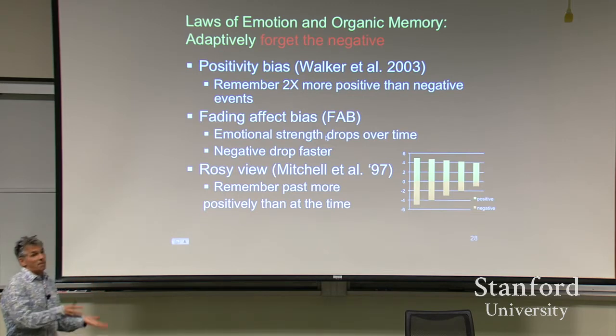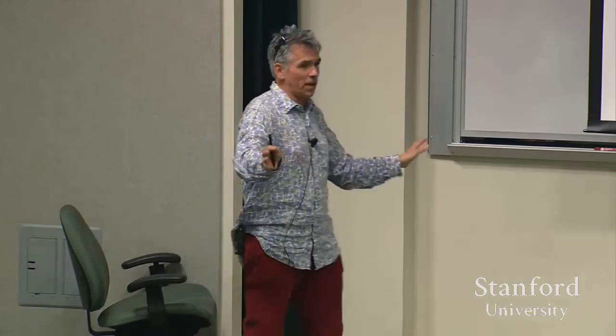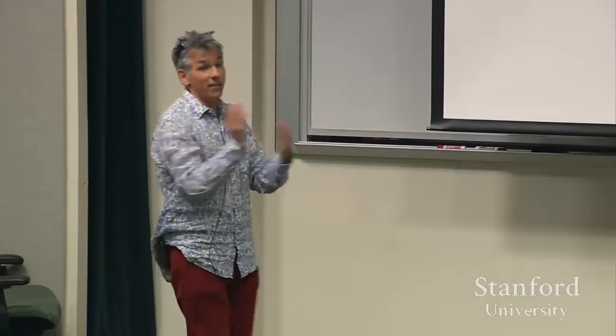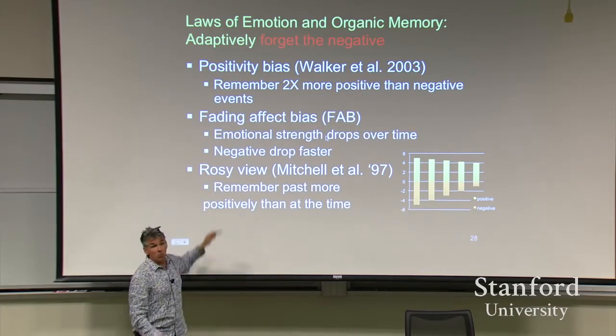There's also something called positivity bias: one of the things we as people do is forget negative or upsetting things. People remember twice as many positive as negative events, with neutral coming in around 30%. The second really interesting result is the fading affect bias: if something happens to us and we think about it again, the affect associated with it drops over time. Importantly, negative events fade much more quickly — faster regression to the mean than positive events. So if something really bad happens, you get over it more quickly than if something really good happens.